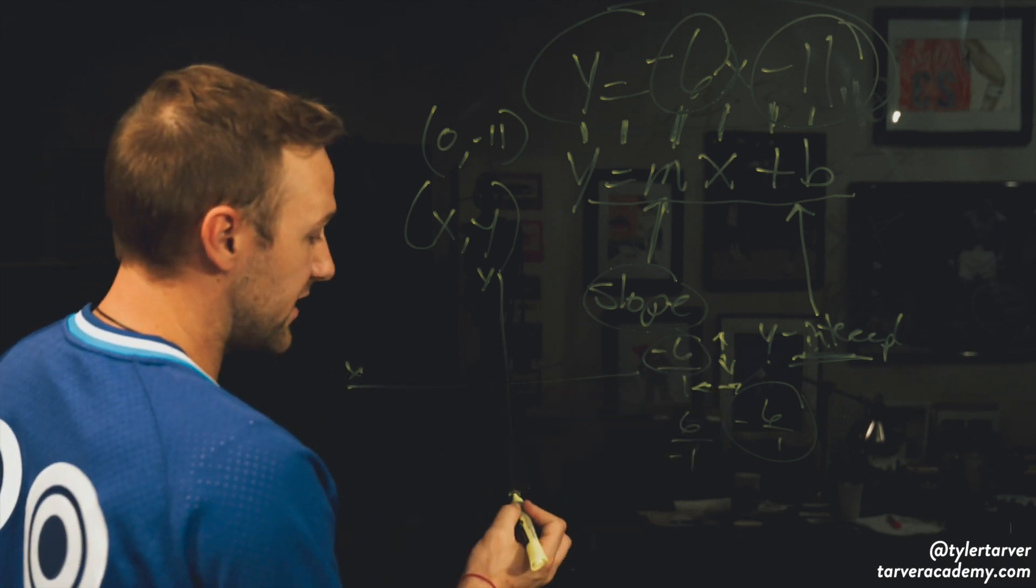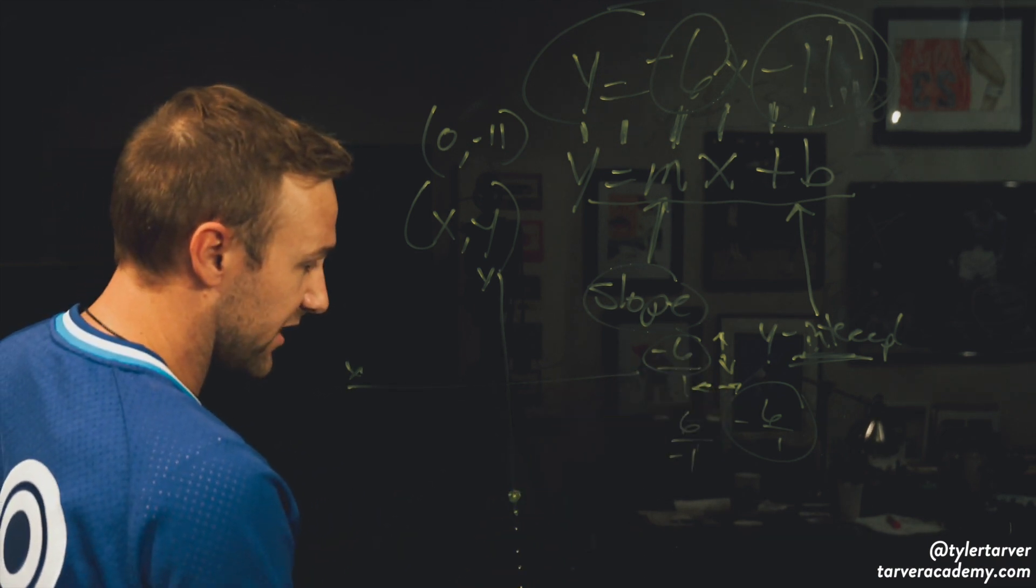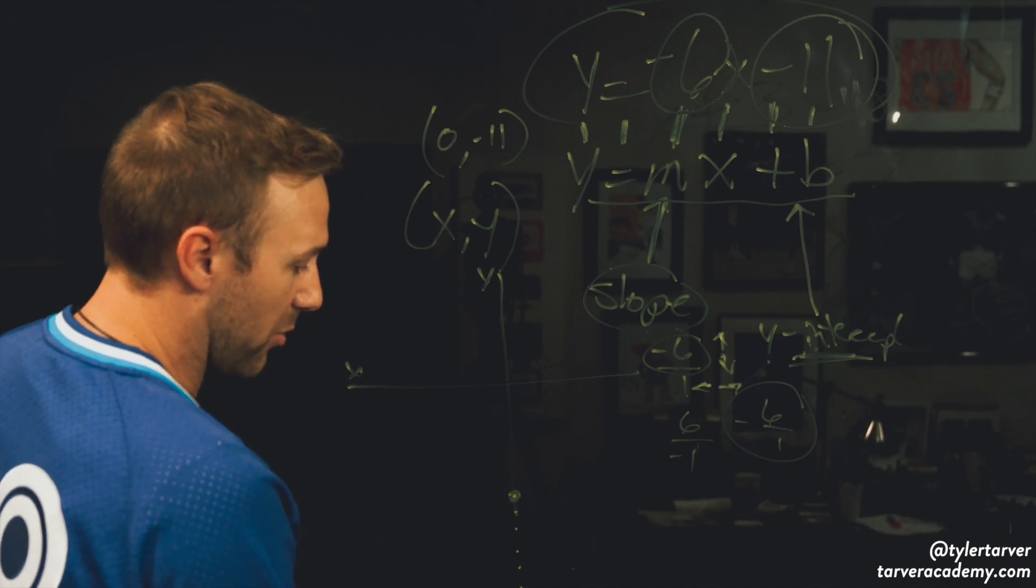So what I'm going to do is I'm going to go down 6, 1, 2, 3, 4, 5, 6. All right, and then I'm going to go over 1. That's another point.